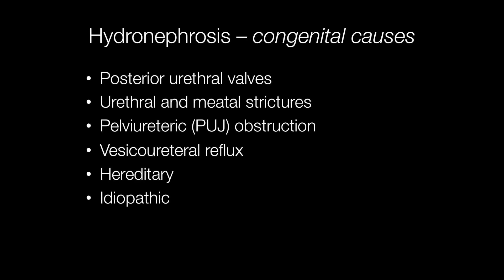If hydronephrosis arises before birth or in children the cause is often congenital. Congenital causes include posterior urethral valves, urethral and meatal strictures, pelviureteric or PUJ obstruction, and vesico-ureteral reflux — that means reflux of urine from the bladder into the ureters. Some cases are hereditary and some cases there may be no obvious cause; in this case it is called idiopathic.